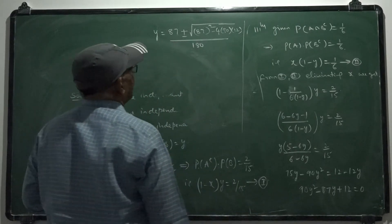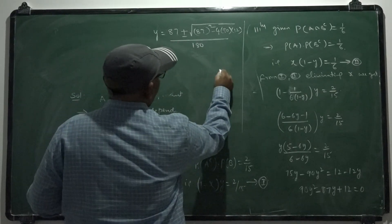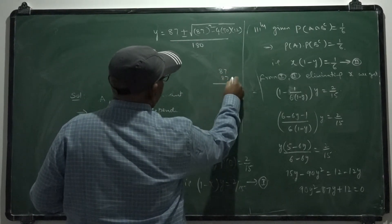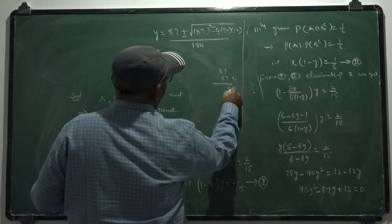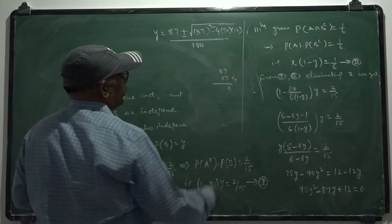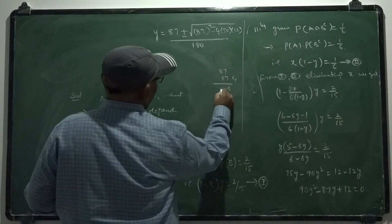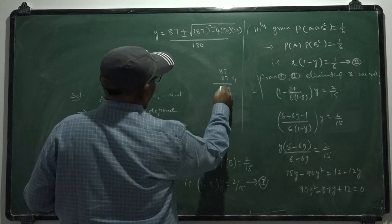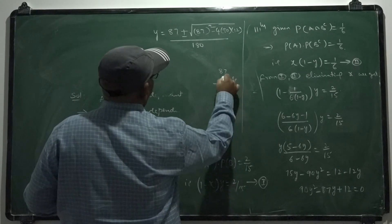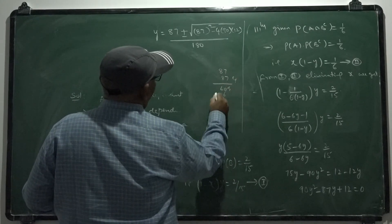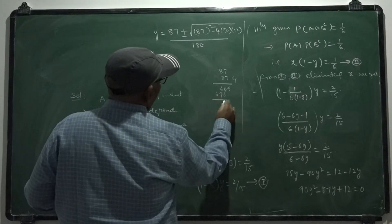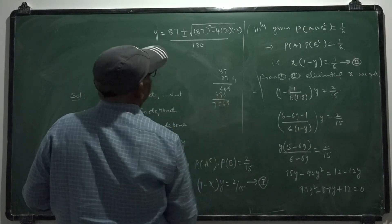We compute: b is 87, discriminant gives root value. This works out to 87 plus or minus 57 divided by 180.